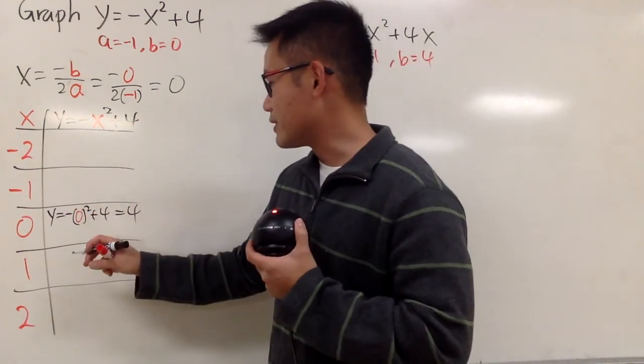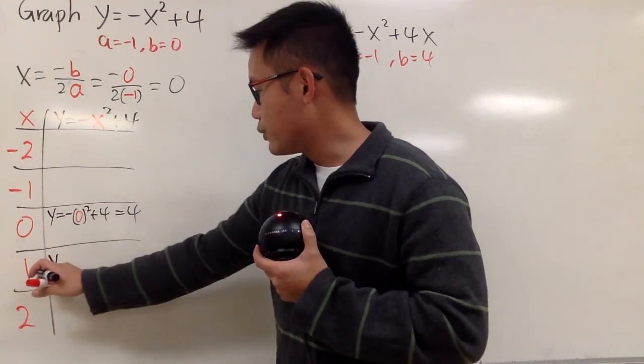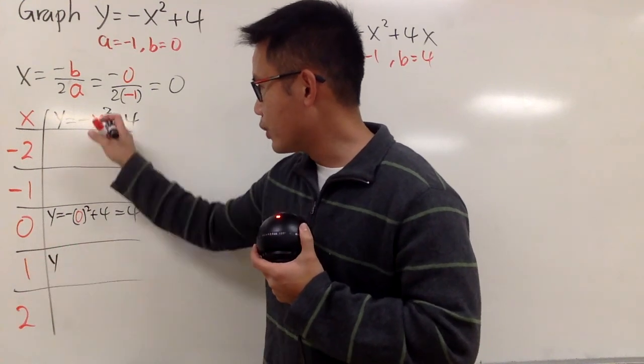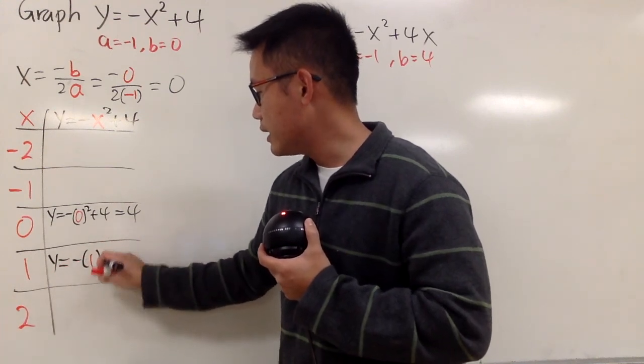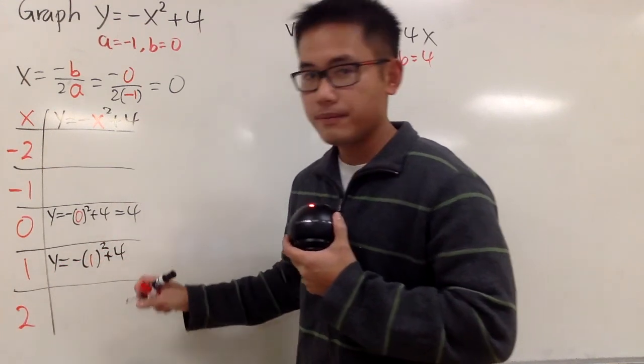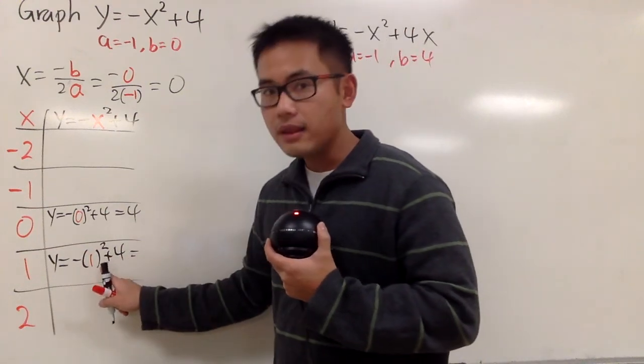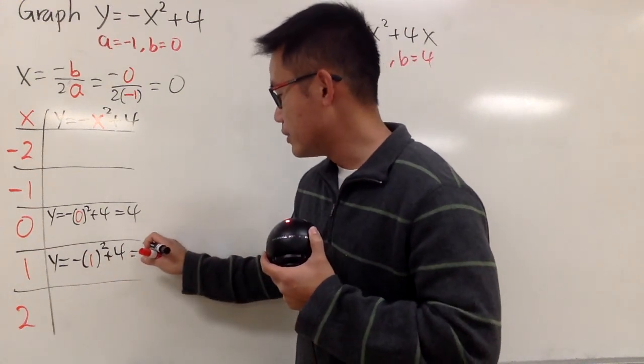And then you just do the same for the rest. When you plug in x is equal to 1 into here, y is equal to negative 1 squared plus 4. And this is going to give you negative 1 and then plus 4, which is 3.